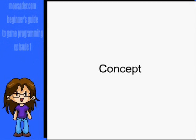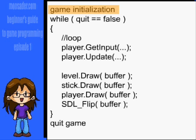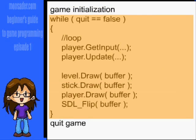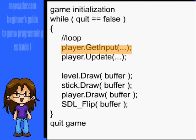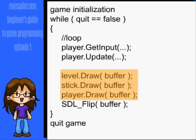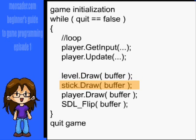Before we get into the code, let me quickly go over the concept of how to draw to the screen, as it can be confusing at first. In every game, after initialization, you go into a game loop. Every time through this loop, we check the input, update game elements, and then draw everything. For 2D games like this, you'll want to draw what is further in the background first, so we'll have the background tiles first, and then maybe items and characters.